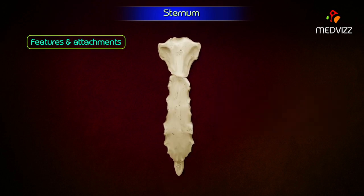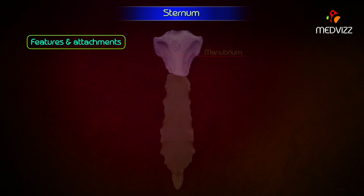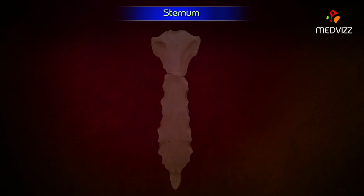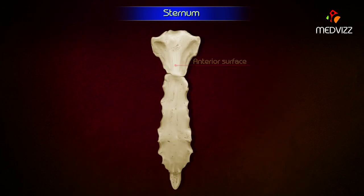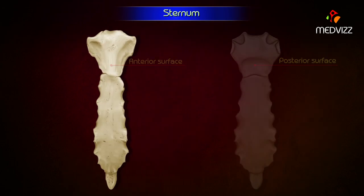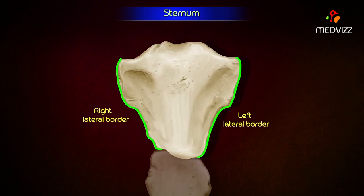Features and attachments. Manubrium. It is roughly quadrilateral in shape. It lies opposite the third and fourth thoracic vertebrae. It is the thickest and strongest part of the sternum and presents the following features: two surfaces — anterior and posterior — and four borders: superior, inferior, and left and right lateral borders.